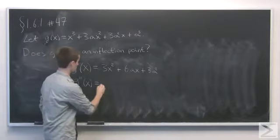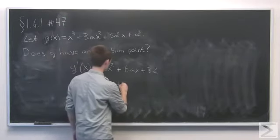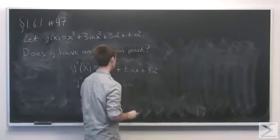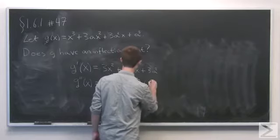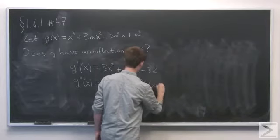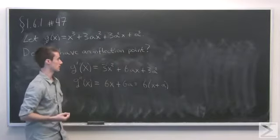And the second derivative will be 6x plus 6a. Now, we can factor out a 6 here, which will leave us with 6 times the quantity x plus a.